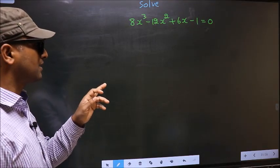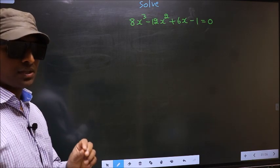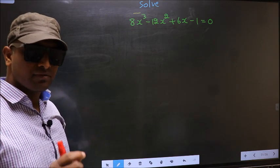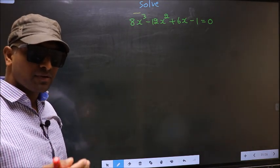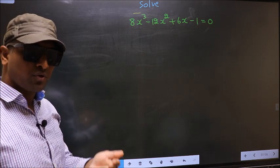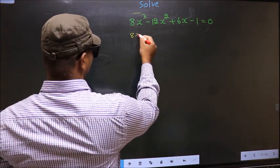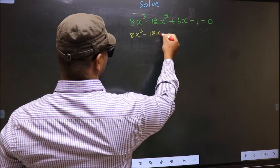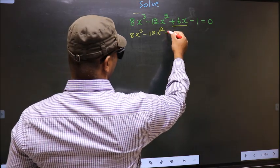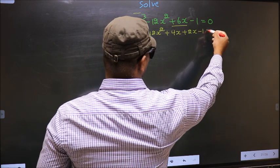Solve 8x³ minus 12x² plus 6x minus 1 equal to 0. We need to find the values of x. For that, we should change the x term. Let me take 8x³ minus 12x² and in place of plus 6x, I write plus 4x plus 2x minus 1 equal to 0.